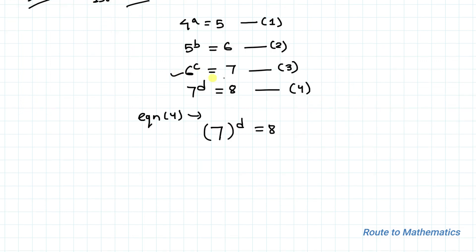From the third equation you can see that 7 equals 6 to the power c. So from the fourth equation, 7 to the power d equals 8, let's substitute the value of 7 — that is 6 to the power c — giving us 6 to the power c, whole to the power d, equals 8.